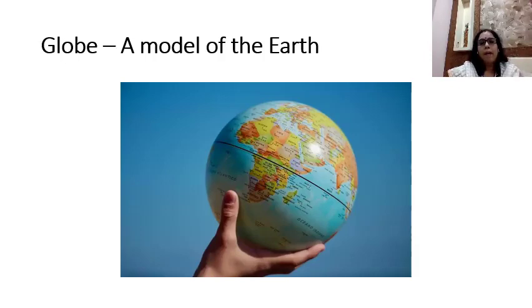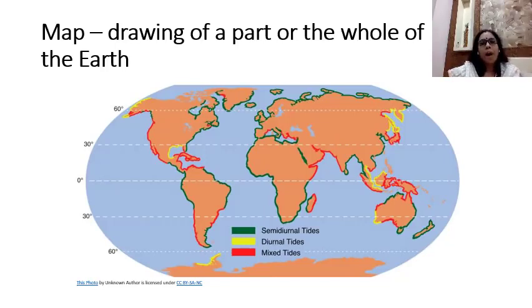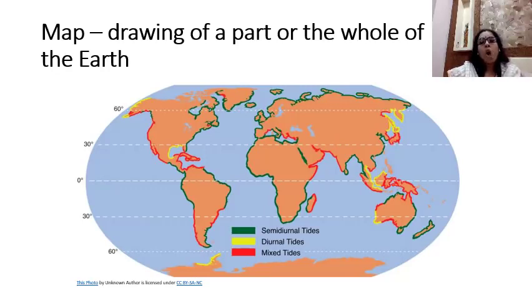Let us learn about map. Now children, view this picture. What is this? This is a map. Now children, tell me, what is a map? Yes, it is a kind of drawing. Drawing of a part or the whole of the earth is called a map. A map can be big or small. We can hang a map on a wall. We call it a wall map.